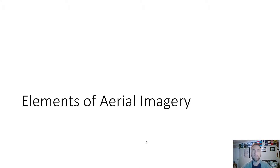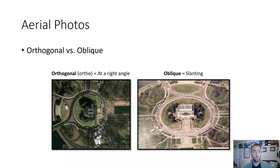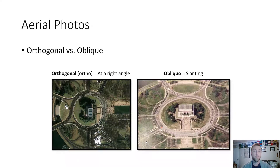What are the elements of aerial imagery? On the left we have what's called an orthogonal or ortho image — orthogonal means at a right angle to the ground — whereas oblique is at a slanting angle, maybe 30 or 45 degrees.